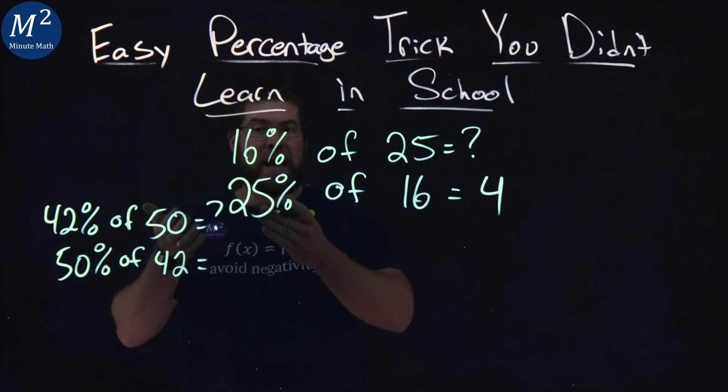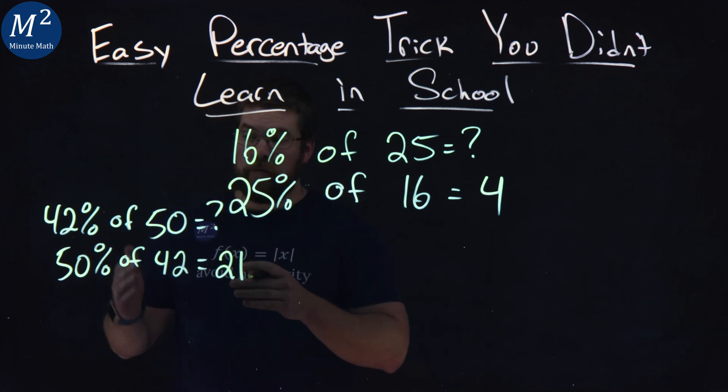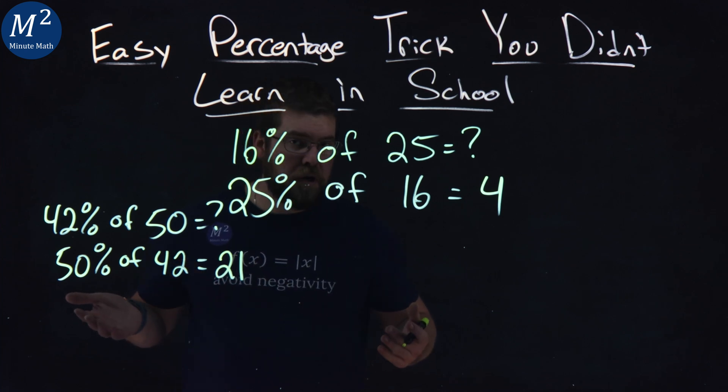Well, 50% of 42 is a lot easier. What's half of 42? 21. You know that. So 42% of 50 is 21. Not bad.